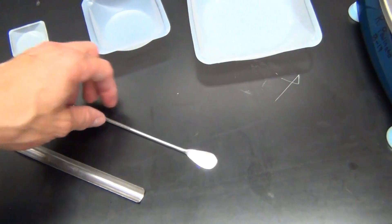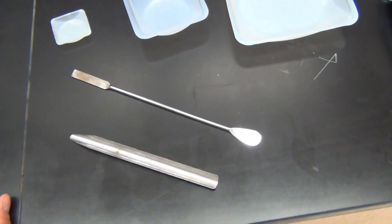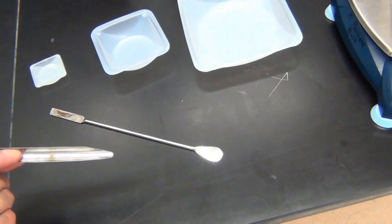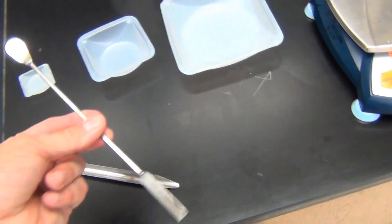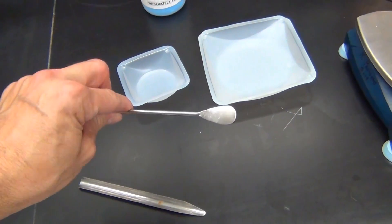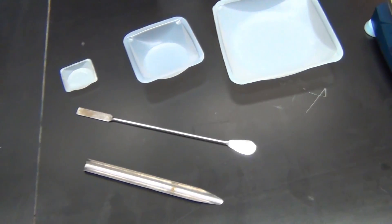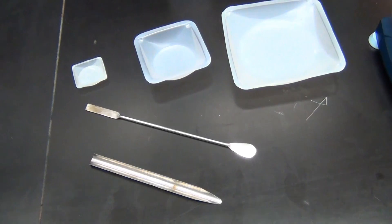These two pieces of equipment here are called scoopulas. One is a scoopula, one is a little bit more of a spatula, a micro scoopula, where it gives you a little bit more control as to the amount of chemicals. You will see both demonstrated here today.